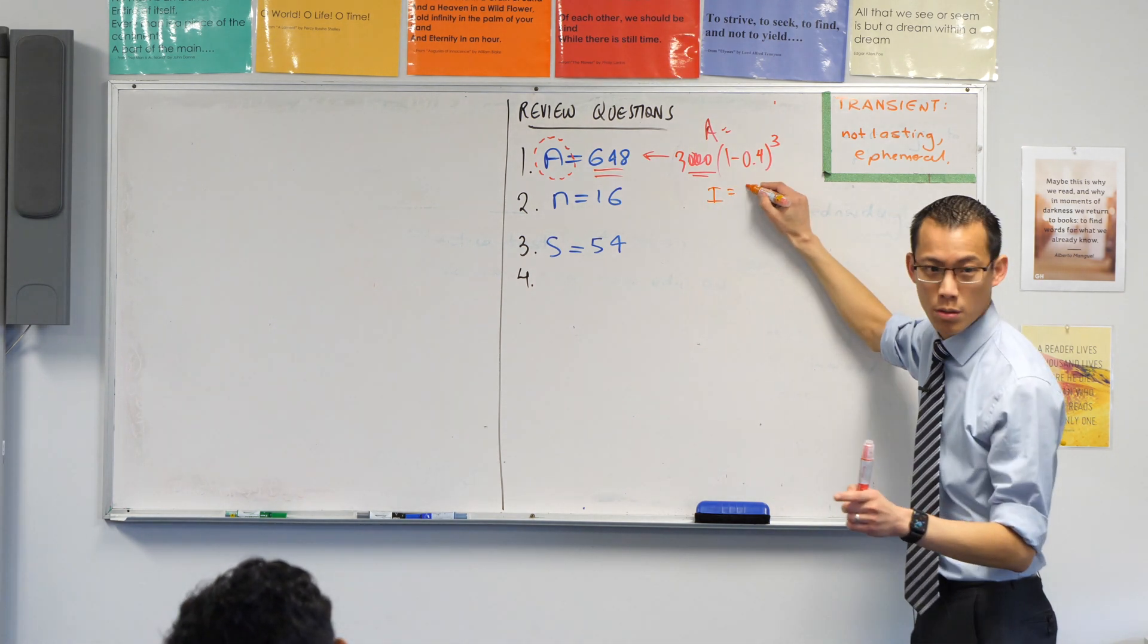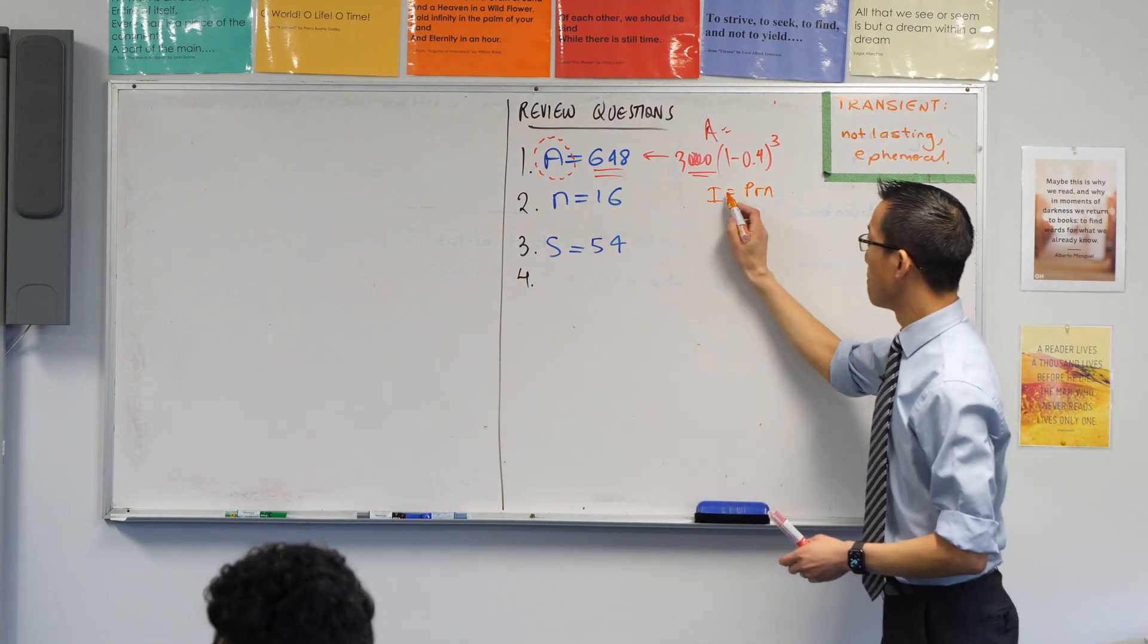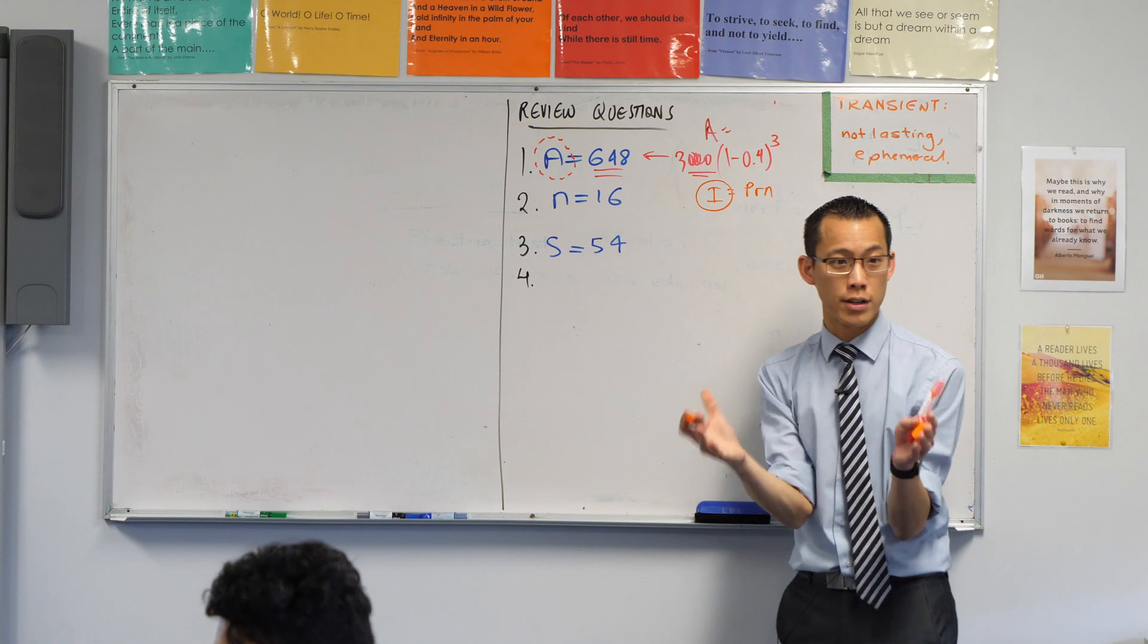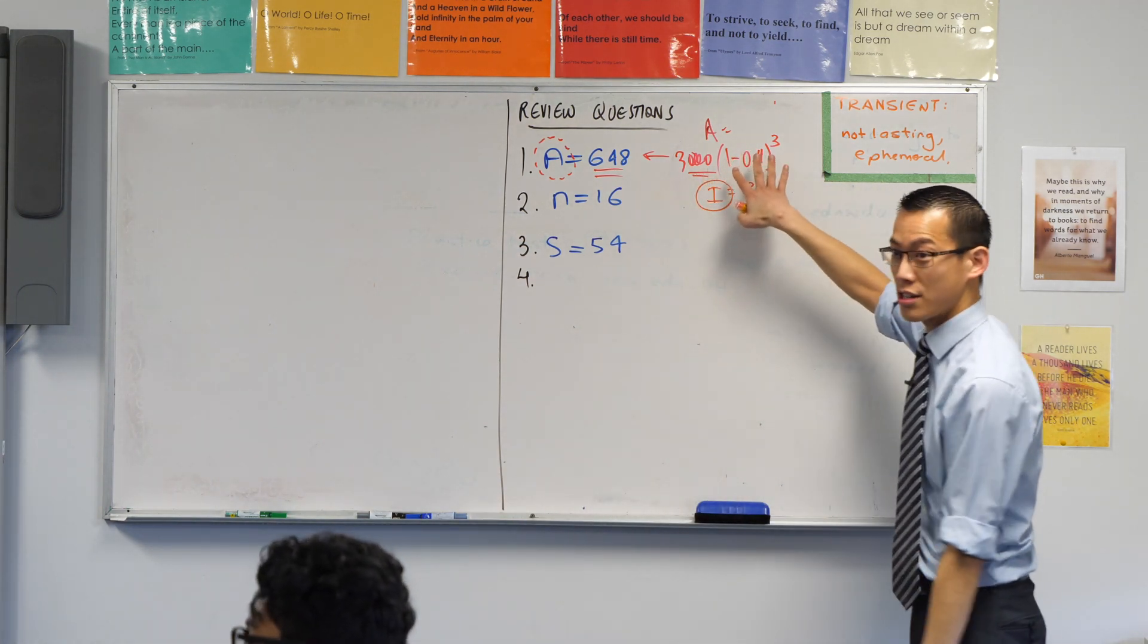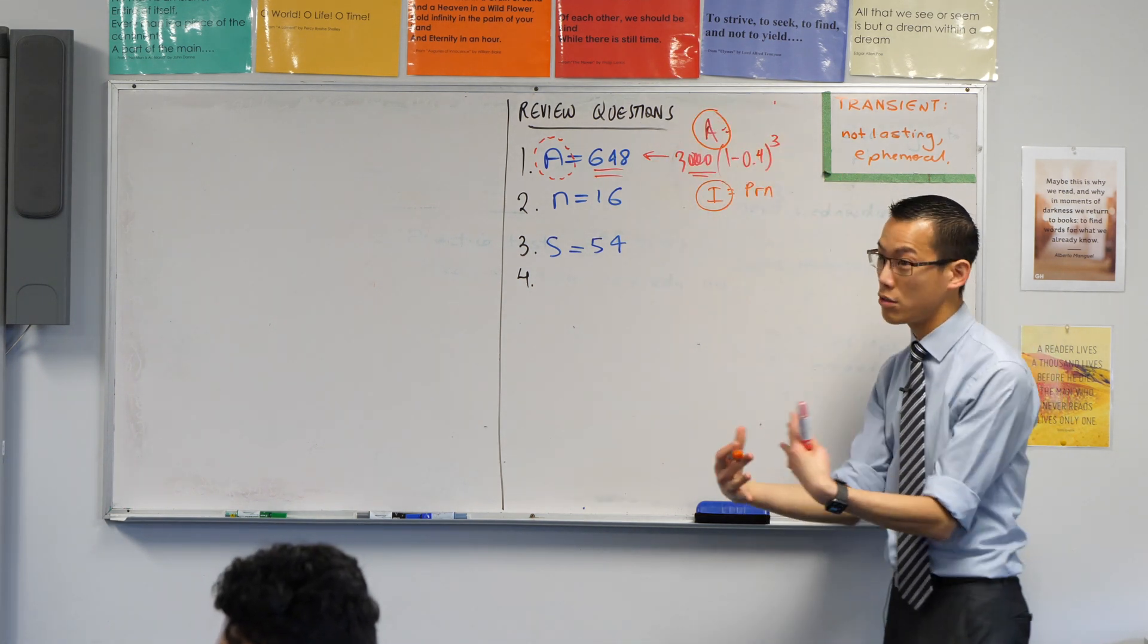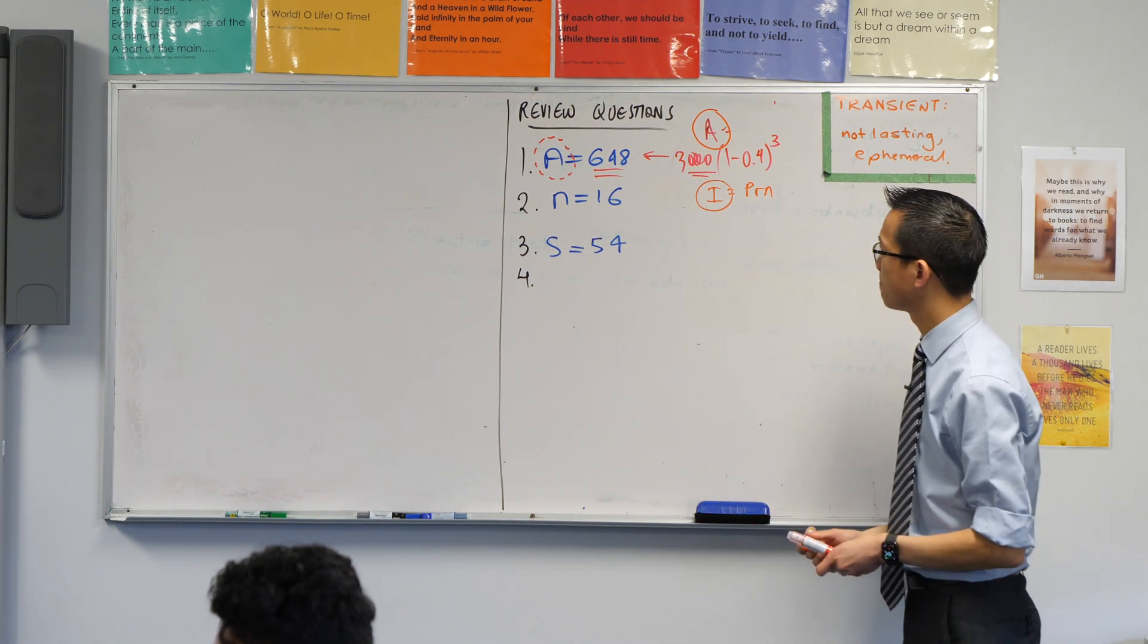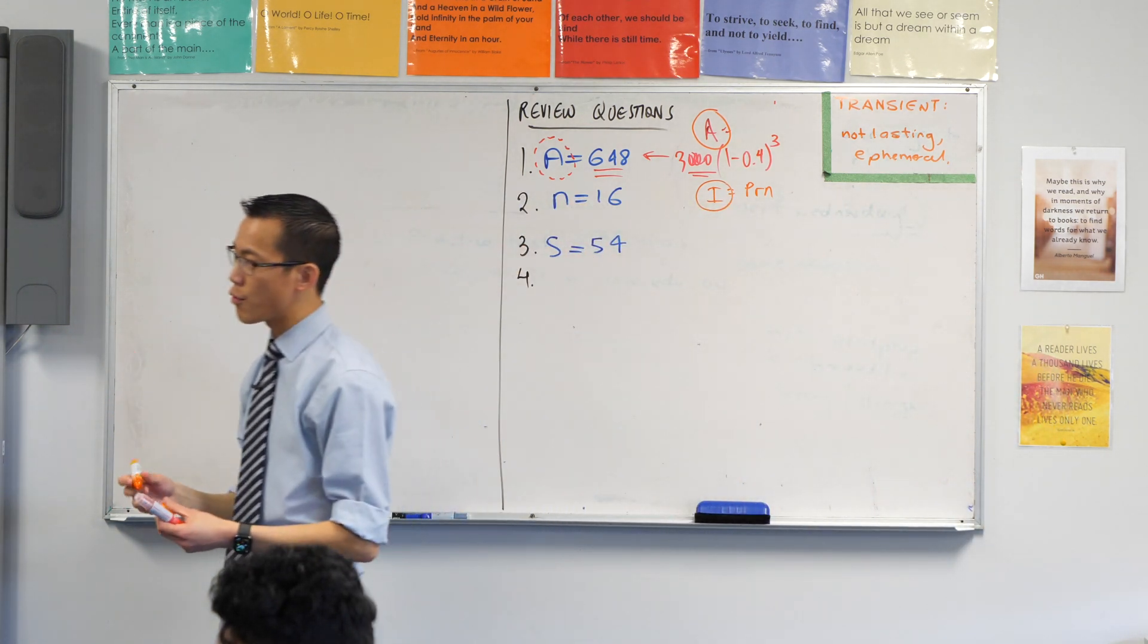This gets to what Zachary was saying before. The simple interest formula gives you the difference, gives you the interest, but the compound interest formula—and therefore the depreciation formula, which is the same thing but in reverse—it actually gives you the amount, what you end up with, not the difference. Happy with that one? Let's have a quick look at number three.